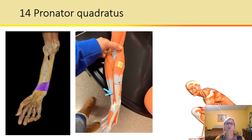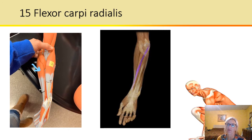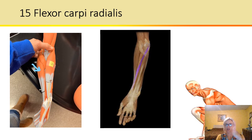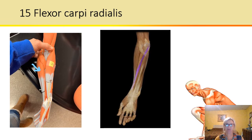Flexor carpi radialis: this is the wrist bender of the radius. Remember, these are our carpals — where our wrist is — so that's where we get carpi. Flexion is the flexing part, and radialis is because it goes along the radius bone. So it makes perfect sense if you really understand what these words mean.